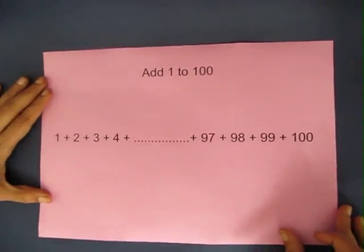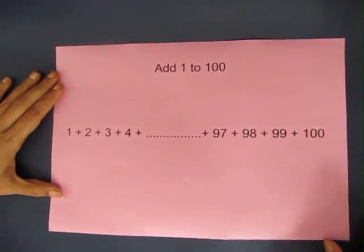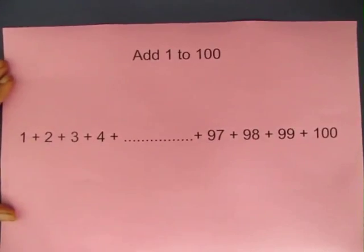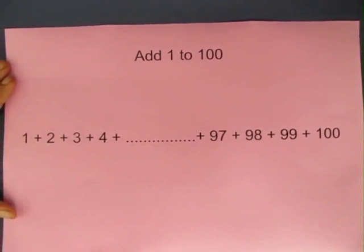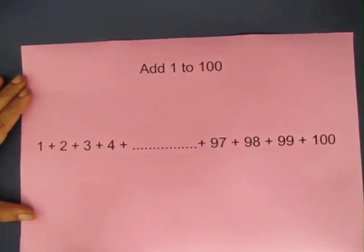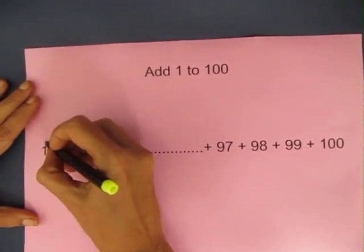When Gauss was in class 2, one day his teacher asked the class to add numbers from 1 to 100. While the other children started adding from 1 plus 2 plus 3 plus 4, slowly they became slower. Gauss just looked at the numbers and a very beautiful pattern emerged.